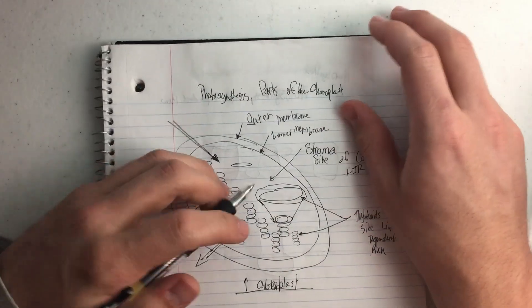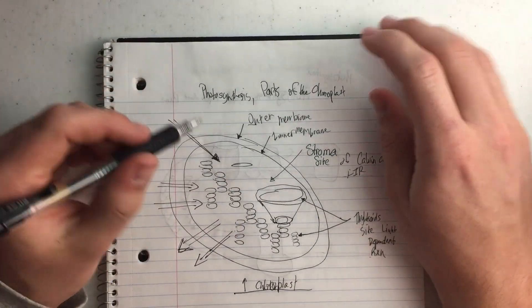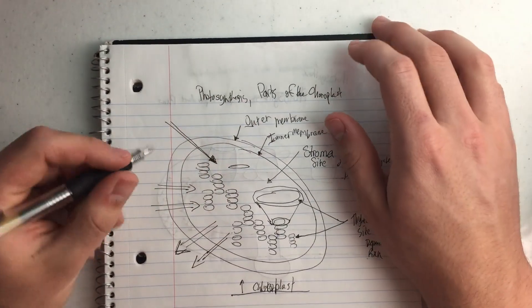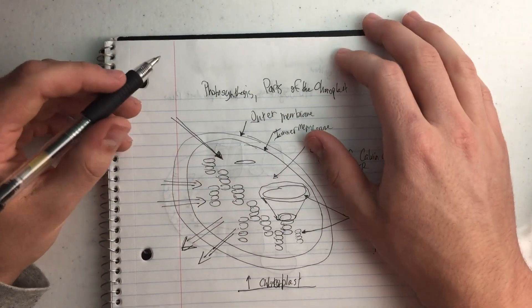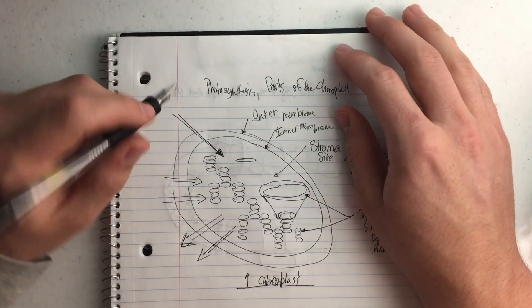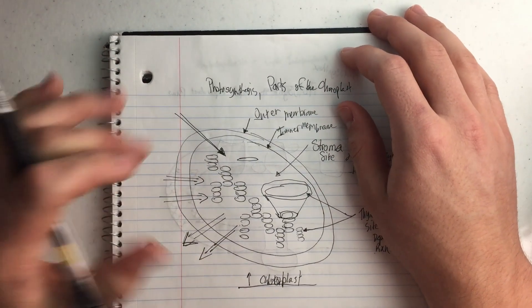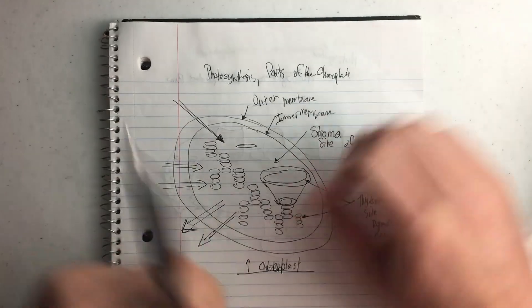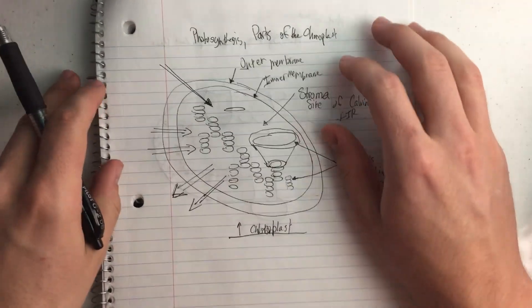So that's basically all the parts of a chloroplast. Also, in my little diagram, I have these other arrows, and these are the products and the reactants that are moving in and out of the chloroplast as photosynthesis is taking place.